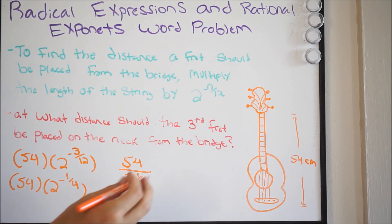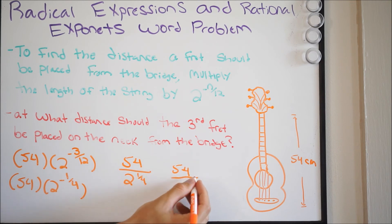And then we can write this as the fourth root, so we'll have the following. So we'll have 54 all over the fourth root 2.